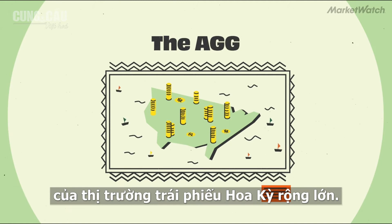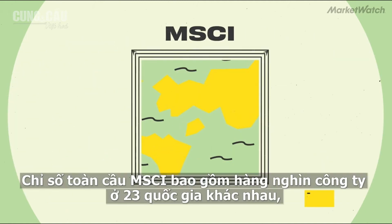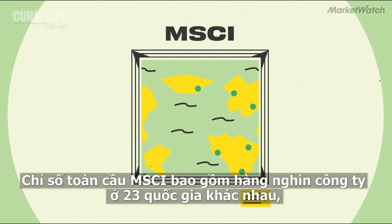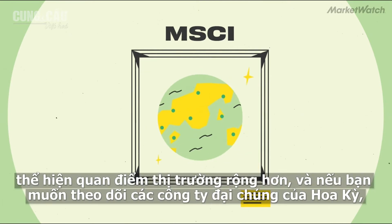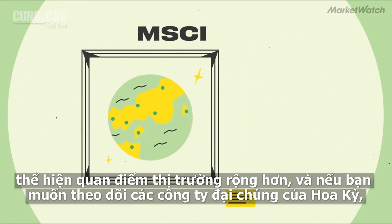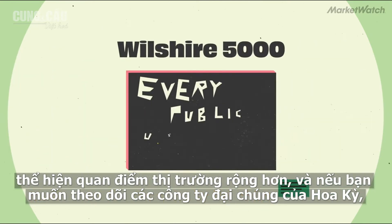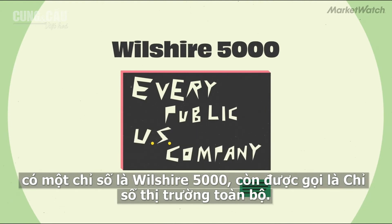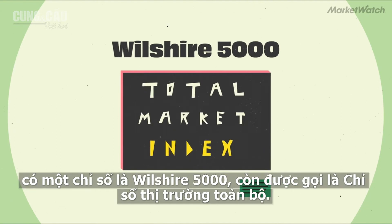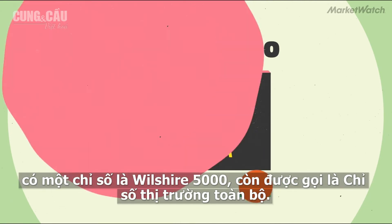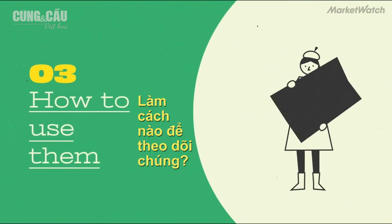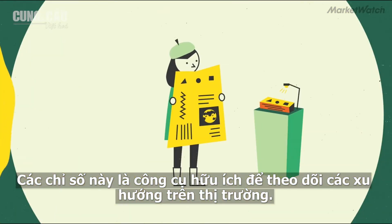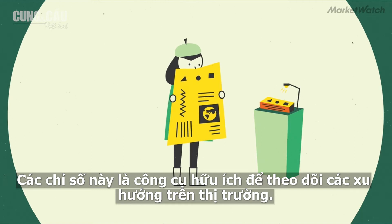For example, the Bloomberg Barclays US Aggregate Bond Index measures the performance of the broad US bond market. The MSCI Global Index includes thousands of companies across 23 different countries, offering a more global market perspective. And if you're interested in tracking every public US company, there's the Wilshire 5000, also known as the Total Market Index.